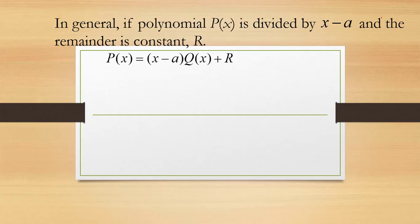From our previous discussion, we noticed that when a polynomial is divided by a linear factor, the remainder is a constant. So in general, if polynomial P(x) is divided by x minus a, and the remainder is a constant, then P(x) is going to be equal to the quotient Q(x) times (x minus a), plus r, the remainder.